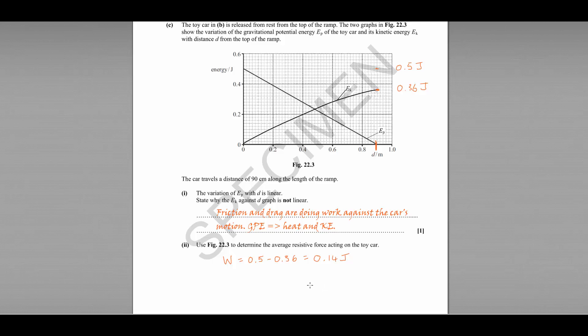We need to find out what that force is. So to do that, we could rearrange our equation. W equals FX, work done is equal to force multiplied by the distance moved in the direction of the force, to get F equals W divided by X. So W is 0.14. X here is the distance moved, which is 0.9, giving us an average frictional force of 0.156 newtons.